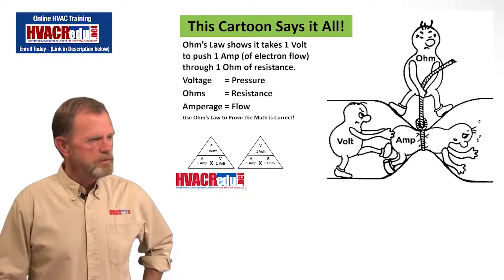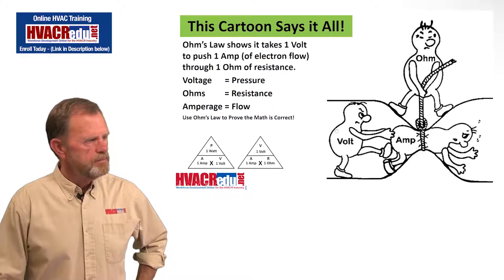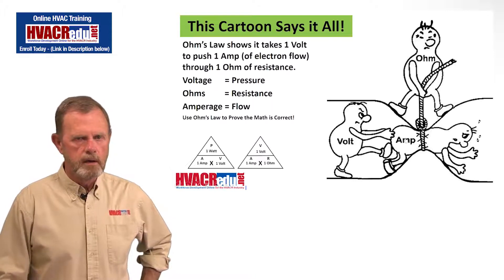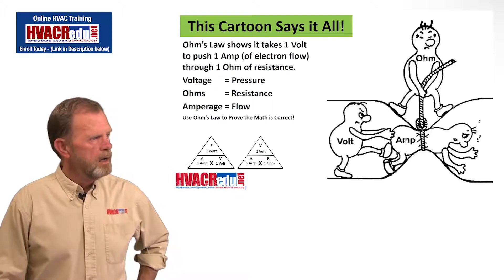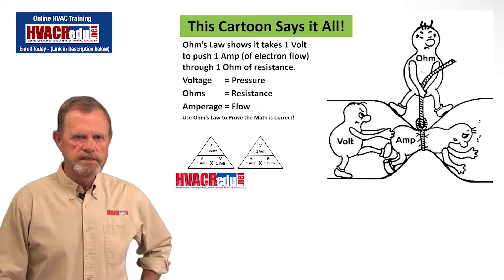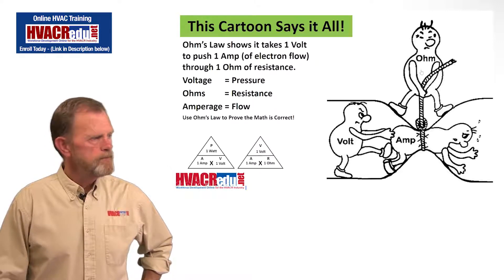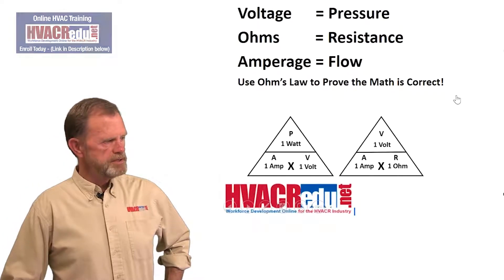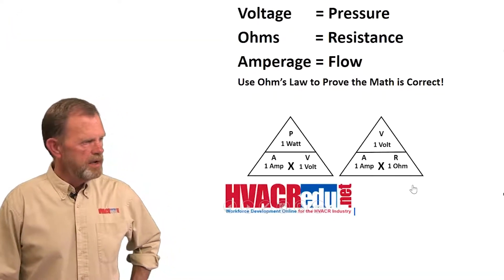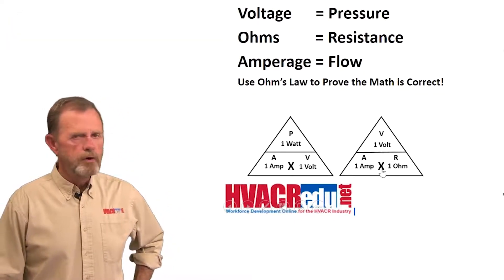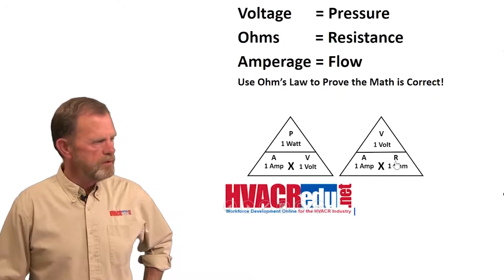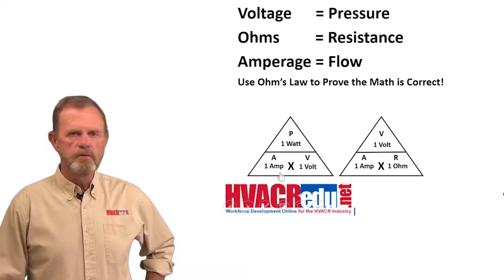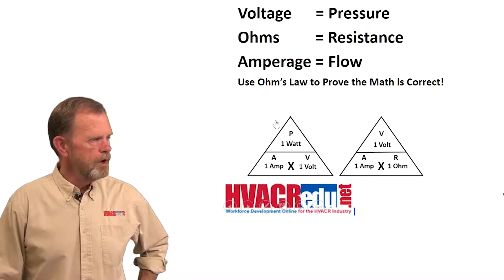It takes one volt to push one amp — although it looks like he's kicking him through one ohm of resistance. If you use Ohm's Law to calculate this it's pretty simple: 1 amp times 1 ohm equals 1 volt. And 1 amp times 1 volt equals 1 watt.